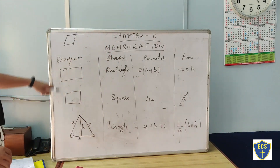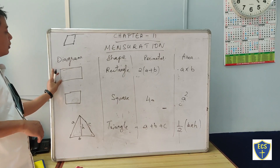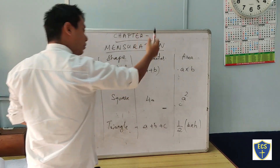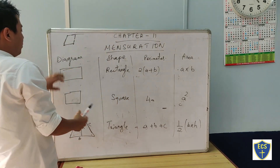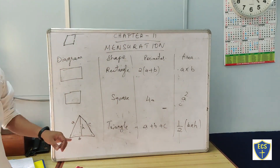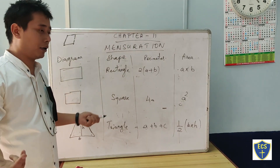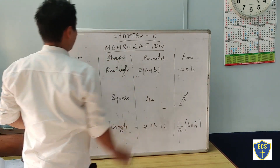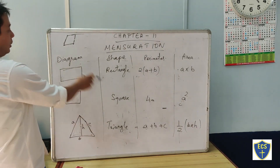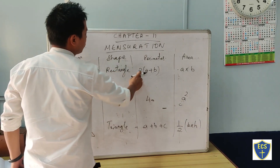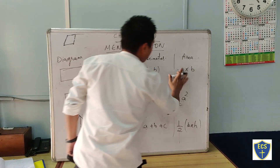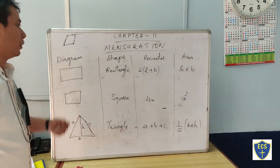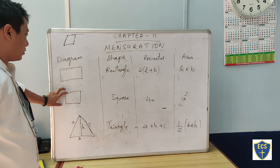Now let's start with the diagram. This is a rectangle. The shape is a rectangle. The perimeter formula for a rectangle is 2 times (length plus breadth), and the area is equal to length into breadth.